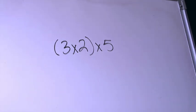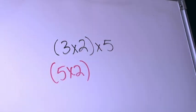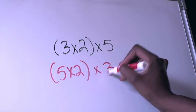I'm going to rewrite this to say in parentheses (5×2) because I feel really good about my facts of 5 and my facts of 2, and I'm going to multiply that by 3.